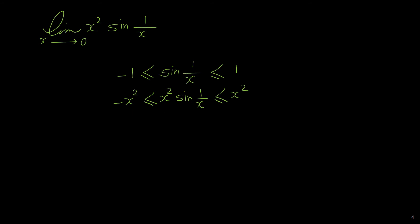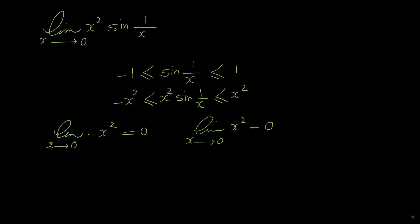Now our complicated function x squared times sine of 1 over x is trapped between two simple functions: negative x squared and x squared. So we use the squeeze theorem. The limit of negative x squared as x approaches 0 is 0 by direct substitution, and the limit of x squared as x approaches 0 is also 0.